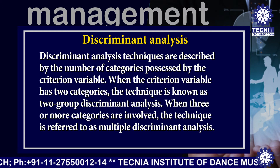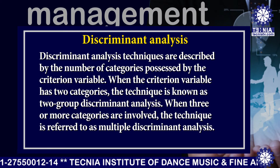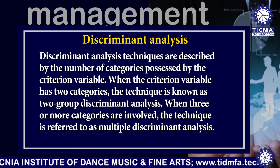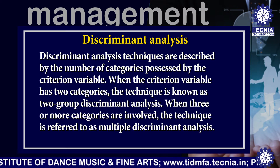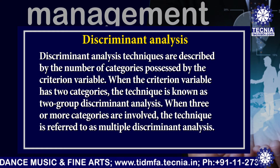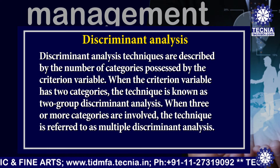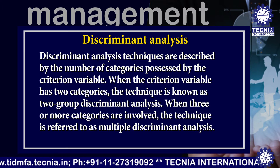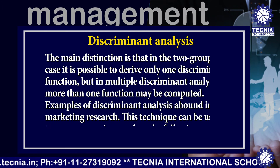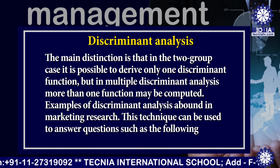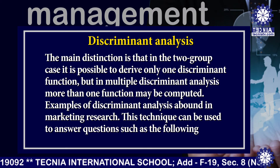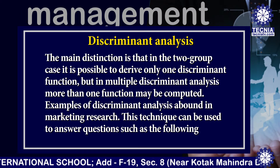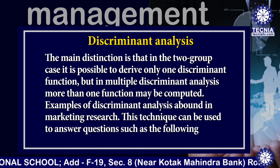Discriminant analysis techniques are described by the number of categories possessed by the criteria variable. When the criteria variable has two categories, the technique is known as two-group discriminant analysis. When three or more categories are involved, the technique is referred to as multiple discriminant analysis. The main distinction is that in the two-group case it is possible to derive only one discriminant function, but in multiple discriminant analysis more than one function may be computed.